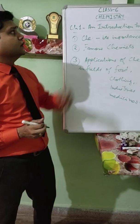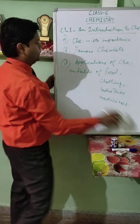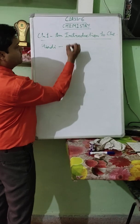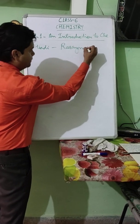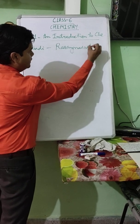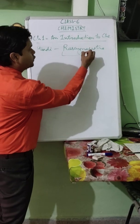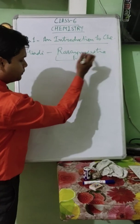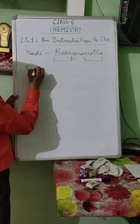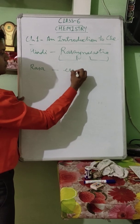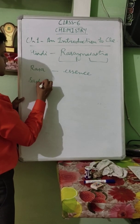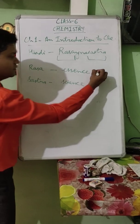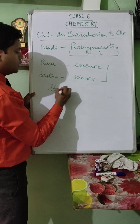Do you know what we call Chemistry in Hindi? In Hindi, Chemistry is known as Rasayan Shastra. It is a combination of two words: 'Rasa' and 'Shastra.' 'Rasa' means Essence, and 'Shastra' means Science. So the collective meaning of Chemistry is the Study of Matter.